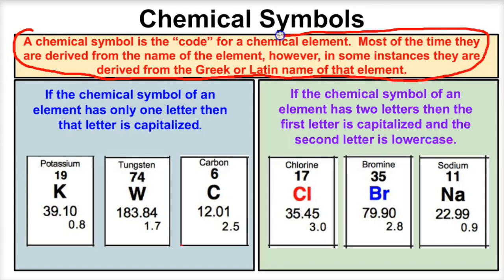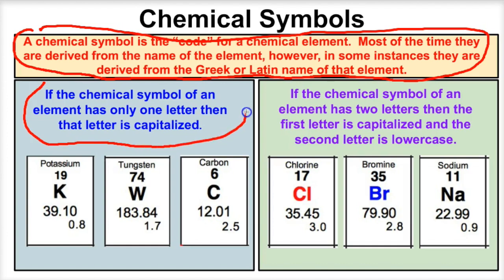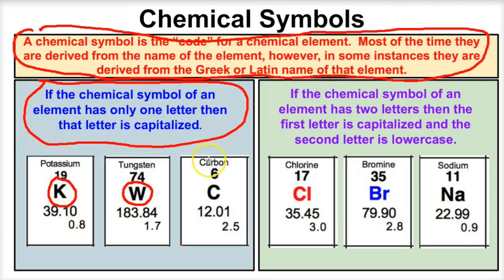Let's take a look at a few examples of some chemical symbols. If the chemical symbol of an element has only one letter, then that letter is going to be capitalized. For example, the chemical symbol for potassium is K — it only has one letter, so we capitalize it. The chemical symbol for tungsten is W, so we capitalize that W. And the chemical symbol for carbon is just C, and because it only has one letter, we capitalize it.